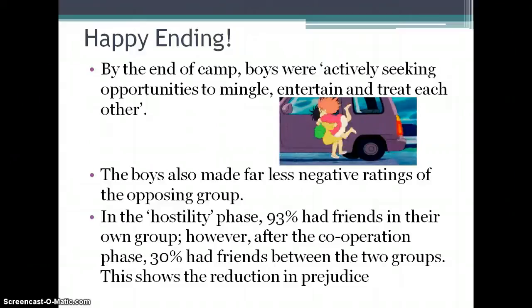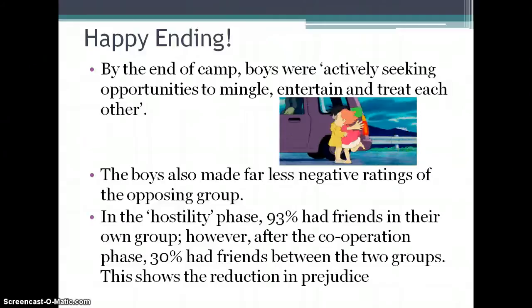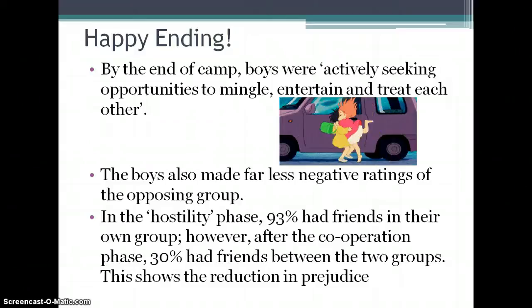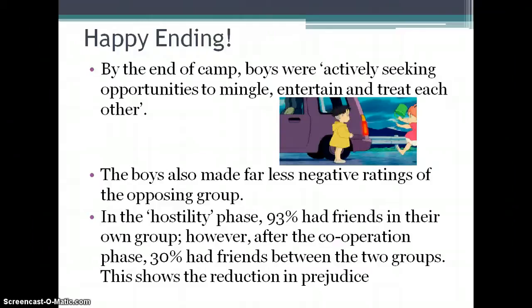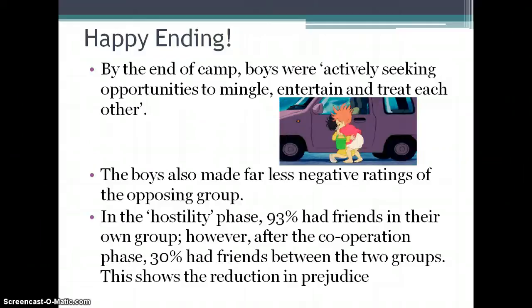The superordinate goals gave a happy ending. By the end of camp, the boys were actively seeking opportunities to mingle and interact with each other, and the animosity and prejudice had stopped. They stopped giving each other negative ratings. In the hostility phase, 93% of friends were within their own group; but in the cooperation phase, 30% of friendships were between the groups — showing a clear reduction in prejudice when they worked together.